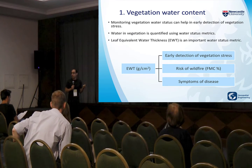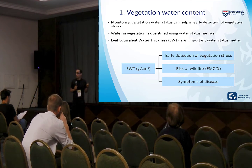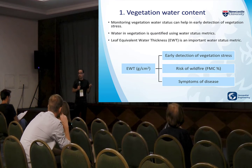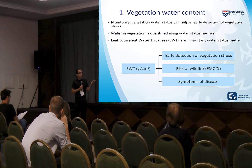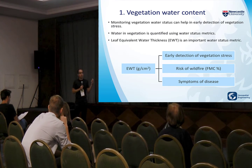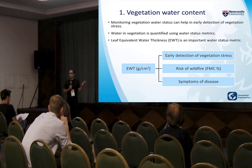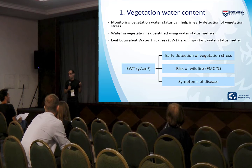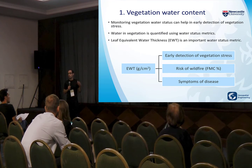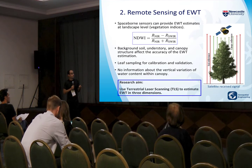EWT is the amount of water in leaves divided by the leaf surface area. It can be used in early detection of vegetation stress and also detection of diseases. It can also be used to estimate another water status metric, fuel moisture content, which can be used in early detection of fire risk.